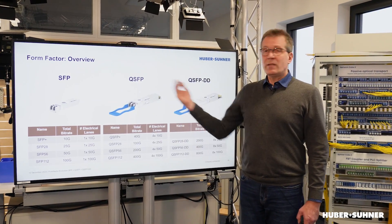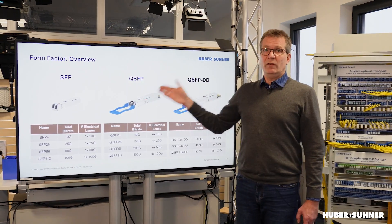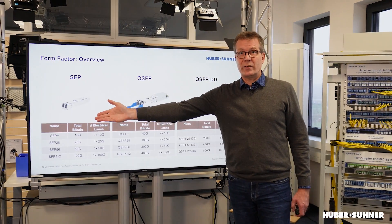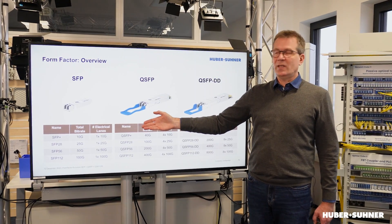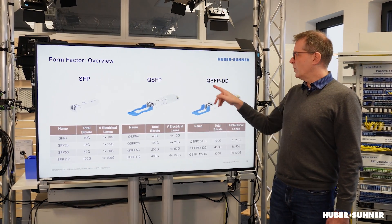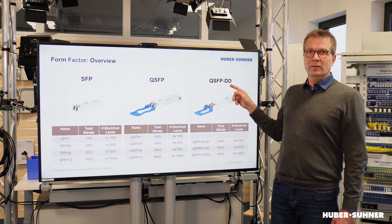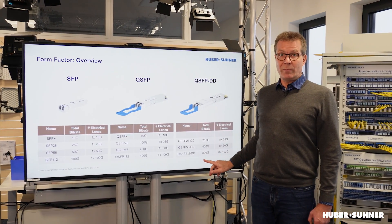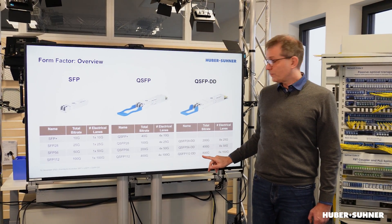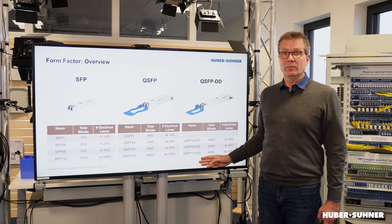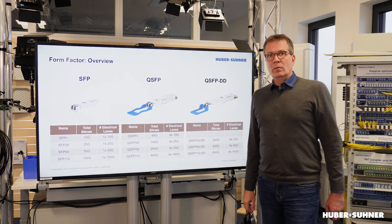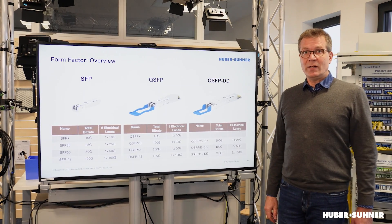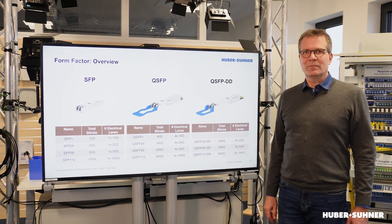So this is the system: three different physical form factors — one single electrical lane for SFP, four lanes for QSFP, and QSFP DD doubles that again into eight, delivering up to 800 Gbps with QSFP112 DD. Hope you learned something today — please leave a comment. See you next time.